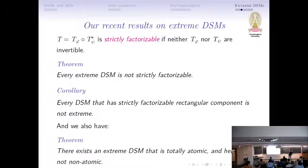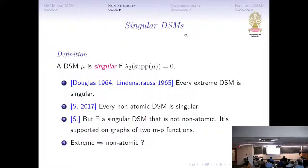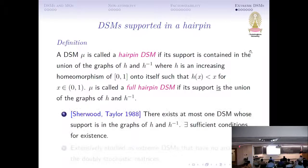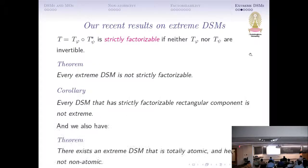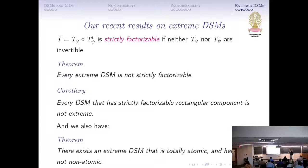We also have this last result: if you remember, we had the question earlier of whether extreme implies non-atomicity of a DSM. Finally, we found an example showing there exists an extreme DSM that is totally atomic — meaning it's not non-atomic at all. This example is quite non-constructive — you cannot construct it explicitly. And that's all the work that I have done on this subject for the past few years.